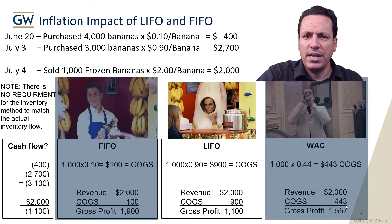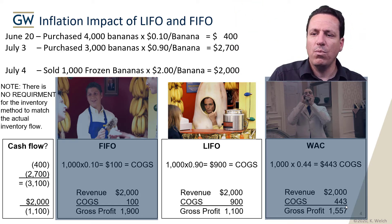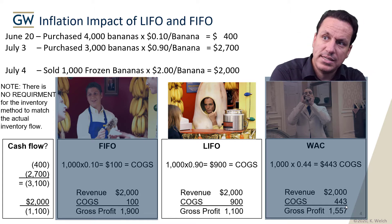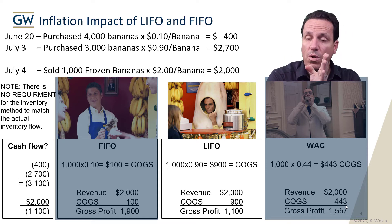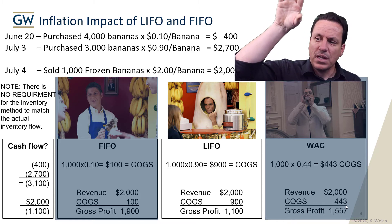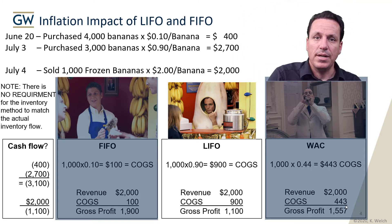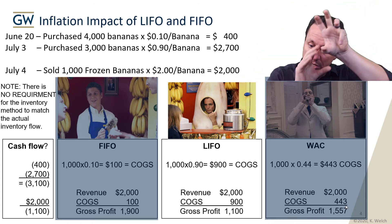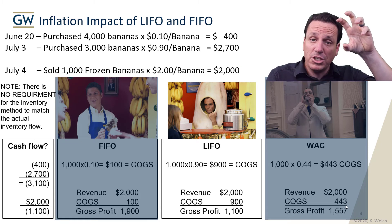It's easy to see what happens in deflation by just flipping the scenario. We had two sets of bananas bought at two different times. If we flip it — buying the first bananas at 90 cents and the next set at 10 cents — the profits would flip too. LIFO would have a gross profit of $1,900 instead of $1,100, and FIFO would change from $1,900 to $1,100. In deflationary periods, LIFO's most current prices are the lowest, so that low amount hits the income statement, resulting in more profitability under LIFO.